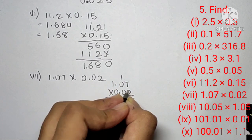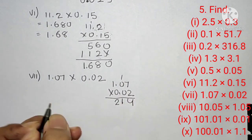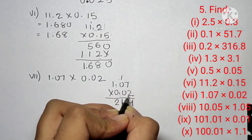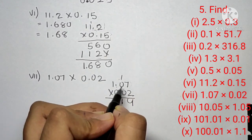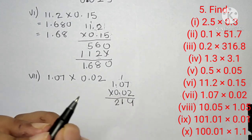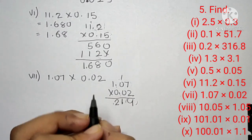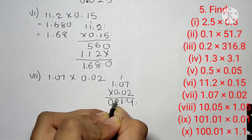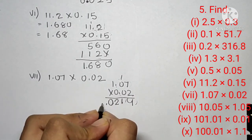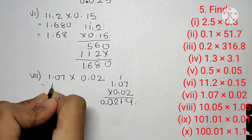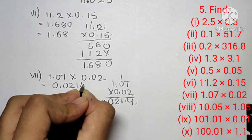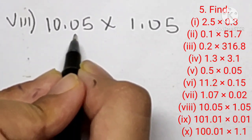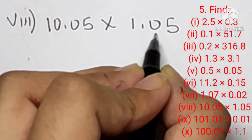Question number five, seventh part is 1.07 into 0.02. Let's multiply: 7 twos are 14, carry 1; 2 ones are 2; down came 1; 2 ones are 2. There are two decimal points, both two digits from the last, so 2 plus 2 equals 4 digits from the last. We place a zero to fill: 1 2 3 4. Our answer is 0.0214.